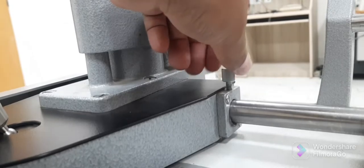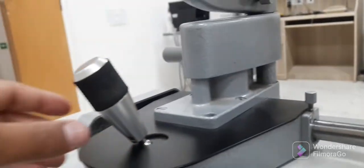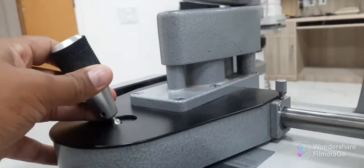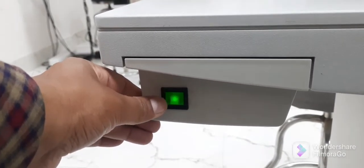is to unlock the slit lamp so that it can move in the desired direction by moving with the joystick, and after that switch on the slit lamp by switching on the power button.